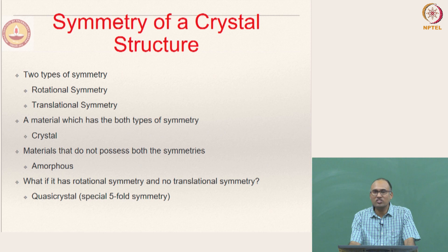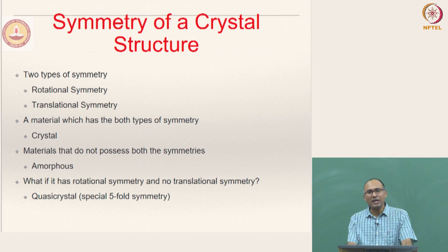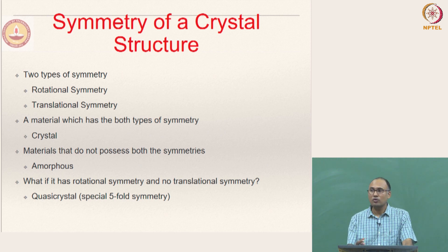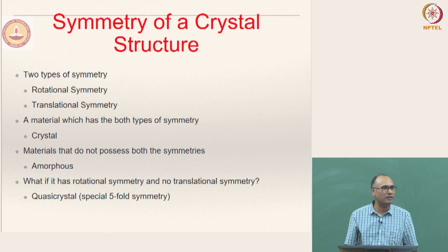If it does not have both the symmetries — neither rotational symmetry nor translational symmetry — then it is an amorphous material. But sometimes you have a special class of materials discovered recently, for which there was also a Nobel Prize. These materials are called quasi-crystals, which will have only rotational symmetry but no translational symmetry — that means only partial symmetry.